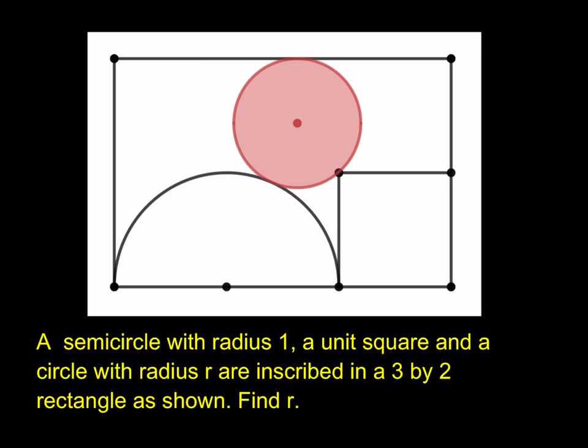Hello everyone. In this video we're going to be solving a geometry puzzle. A semicircle with radius 1, a unit square, and a circle with radius r are inscribed in a 3 by 2 rectangle as shown. Find r, which is the radius of the circle.